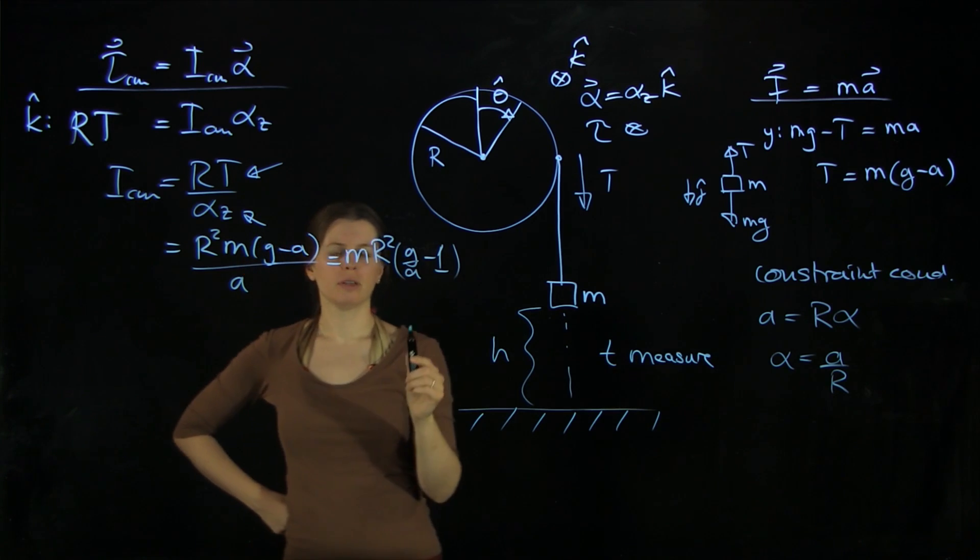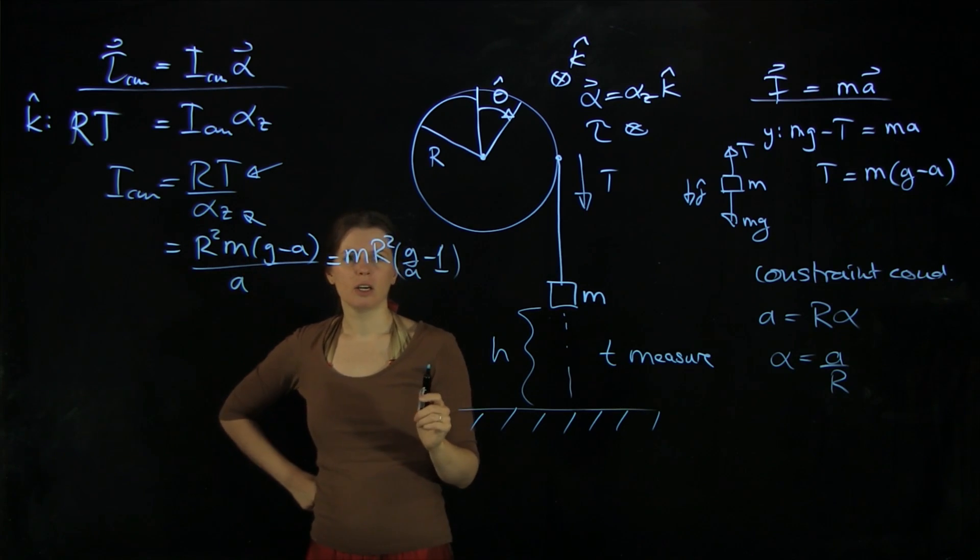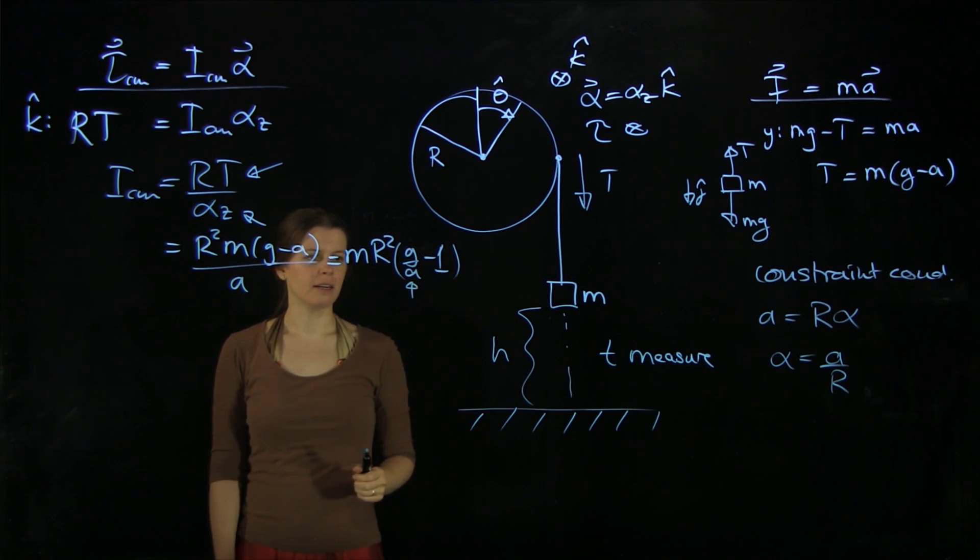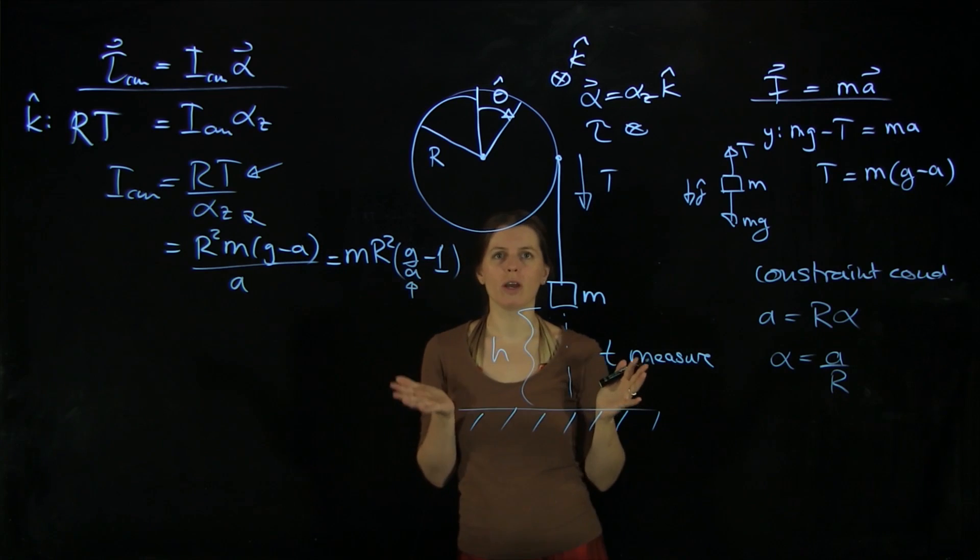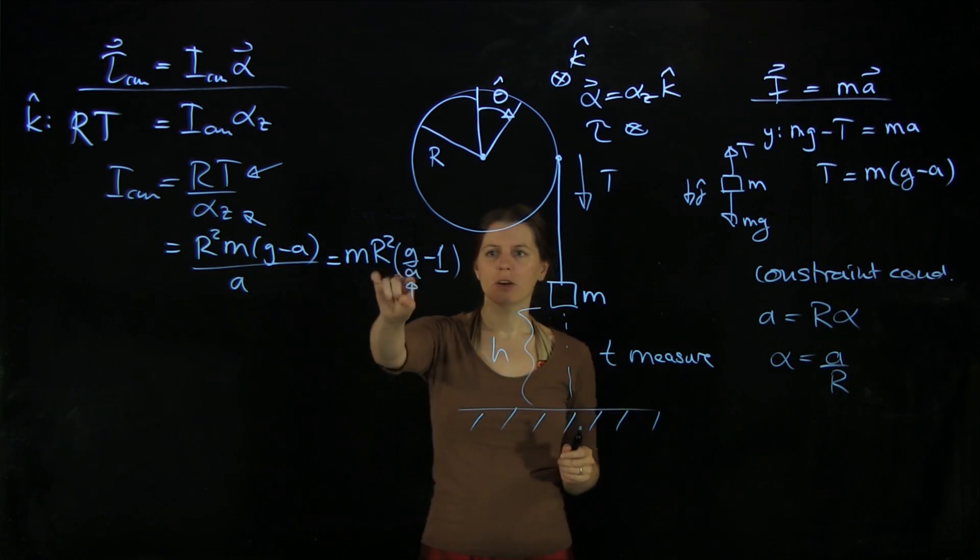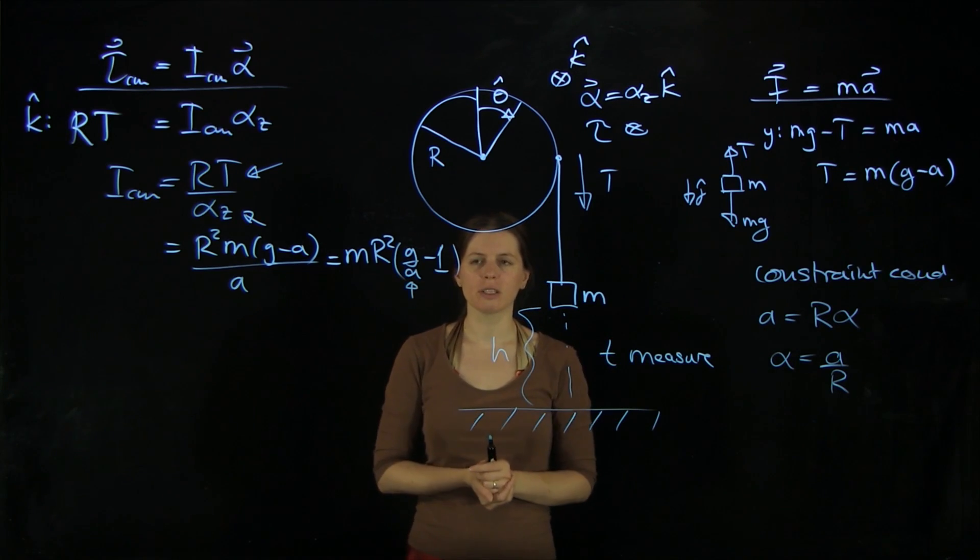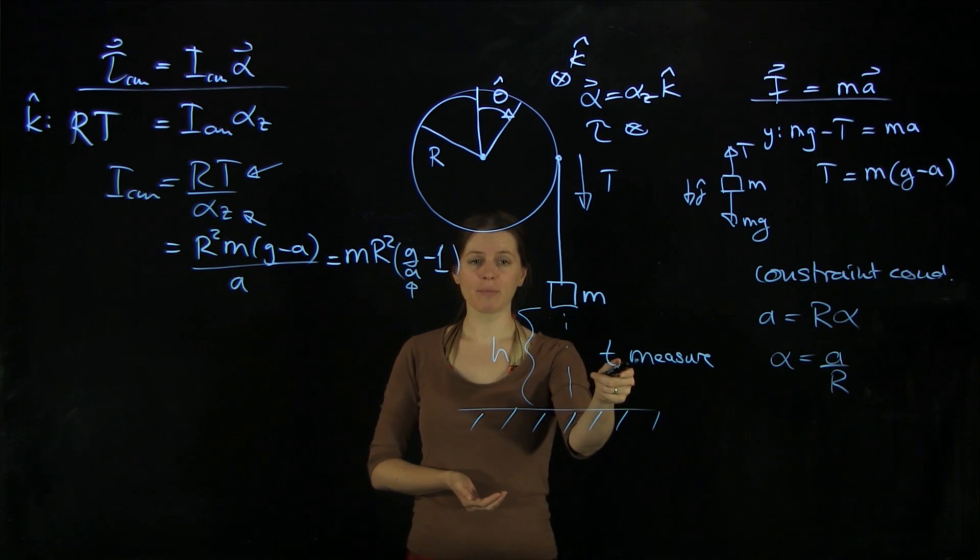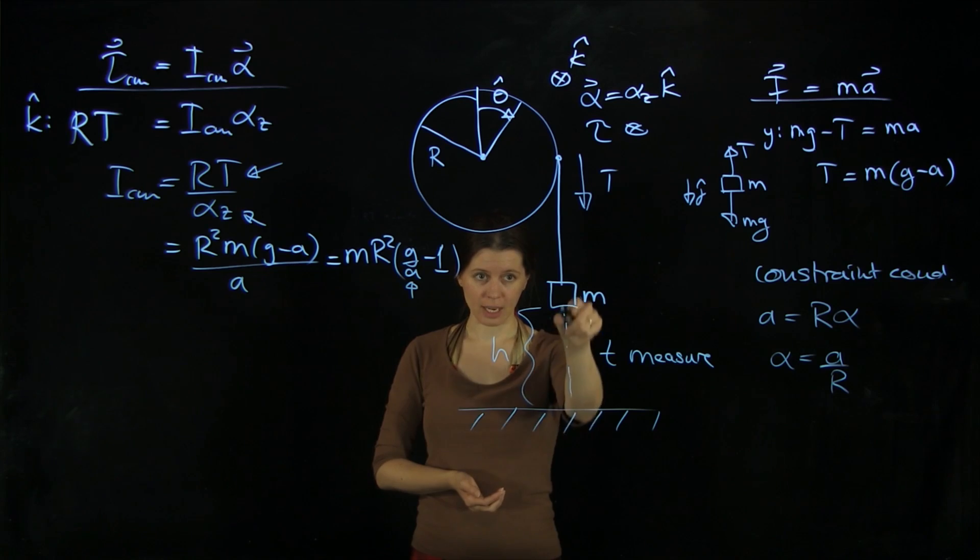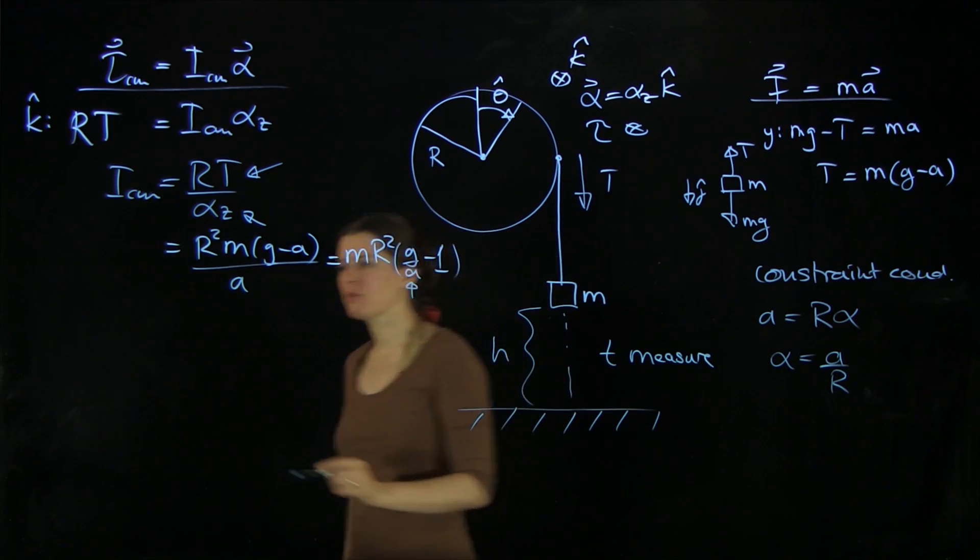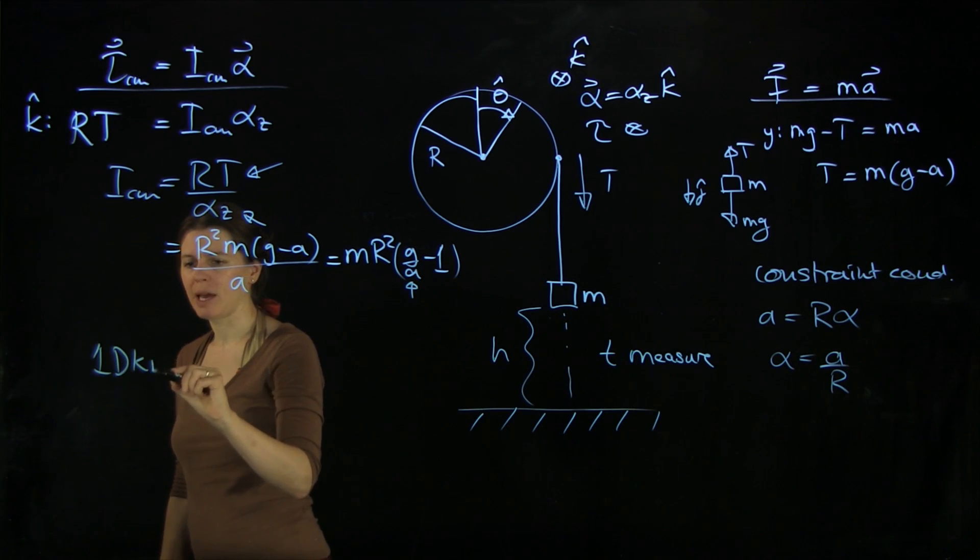Good. So now we have one last hurdle, namely that a here. That a we can't measure. I said in the beginning we want to make an experiment. Actually, we need that experiment because we can't otherwise get to this a. So what we need is a relation that connects what we can measure, which is the time it falls down this height here to the acceleration of this block. And of course, that comes from one-dimensional kinematics.